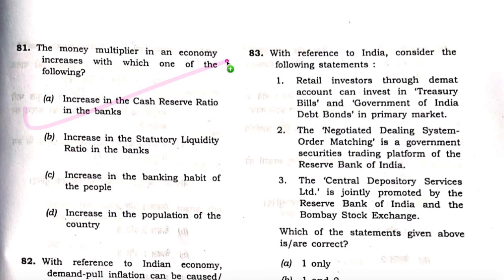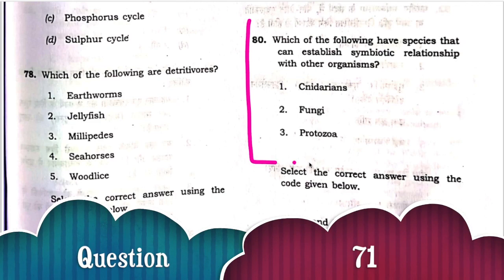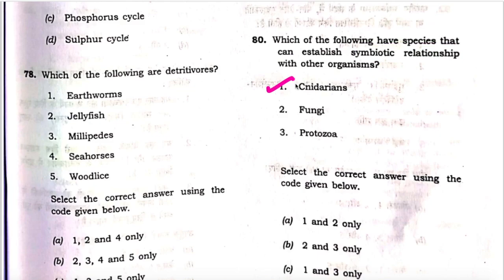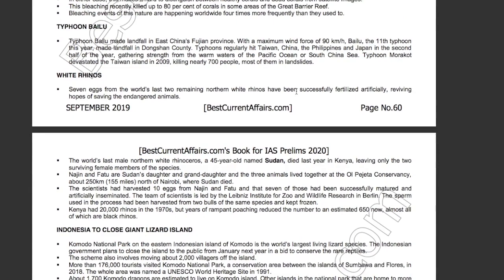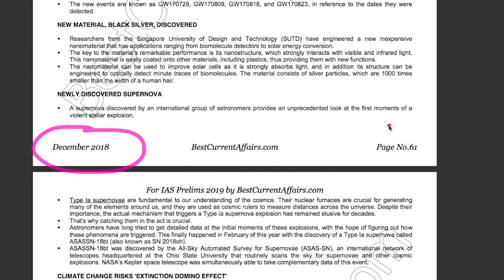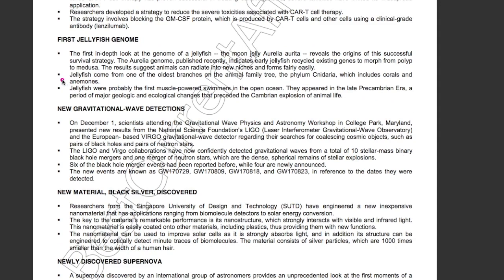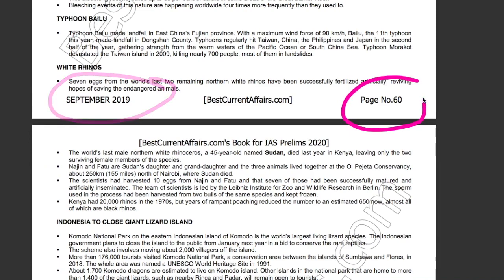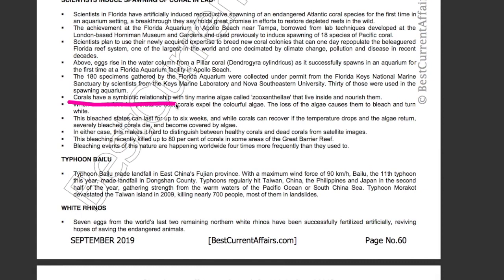Next question: Which of the following have species that can establish a symbiotic relationship with other organisms? First check the Cnidarians. From our December 2018 current affairs book, page 61, jellyfish comes from one of the oldest branches of the animal family tree — Phylum Cnidaria — which includes corals. From our September 2019 current affairs book, page 60, corals have a symbiotic relationship with tiny marine algae. Therefore, Cnidarians is correct.